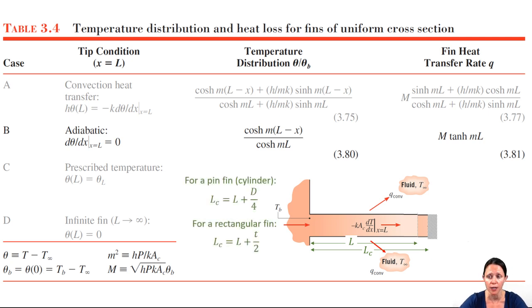So for a pin fin, we add the diameter divided by four to the length. And for a rectangular fin, we add the thickness divided by two. So long story short, if you have convection at the tip and you don't want to use the boundary condition for case a, use case b with a corrected length. Of course, if you have the situation where the end is truly insulated, you'd model with case b and not use the corrected length.